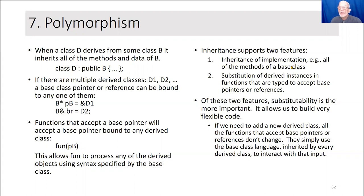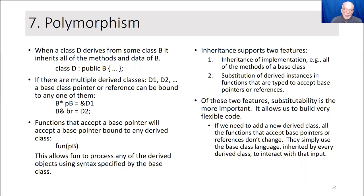Since the interface of the base class hasn't changed just because we added a new derived class, the function doesn't know the difference — it just does its base thing to those pointers. Inheritance supports two features: inheritance of implementation, where we acquire all the methods and all the data of the base class, and the more important feature, substitution. We can substitute any one of the derived objects through a base pointer, and the function doesn't have to have any knowledge specialized for those derived classes. Very, very powerful.